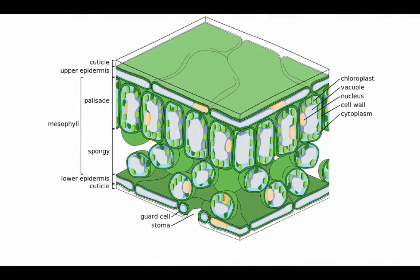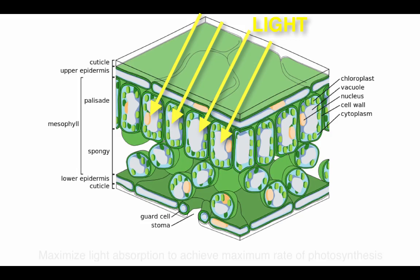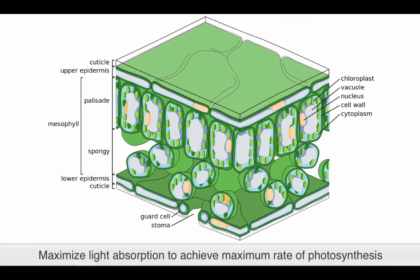The position of these palisade cells in the upper mesophyll layer and the large number of chloroplasts they contain allow them to maximize light absorption to achieve the maximum rate of photosynthesis possible.